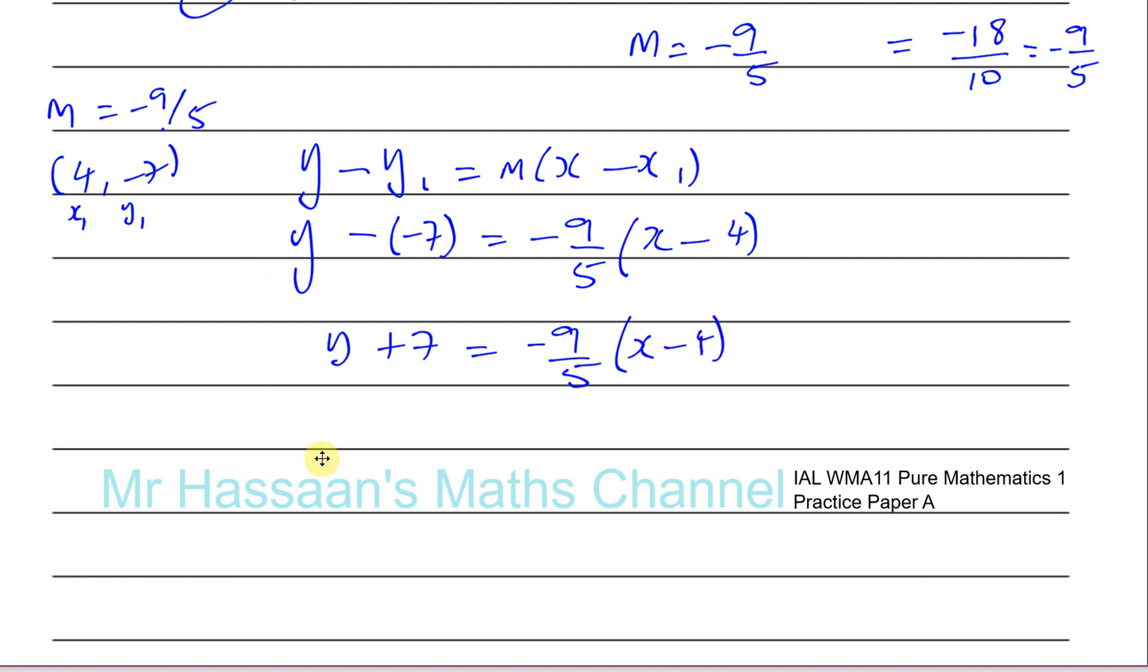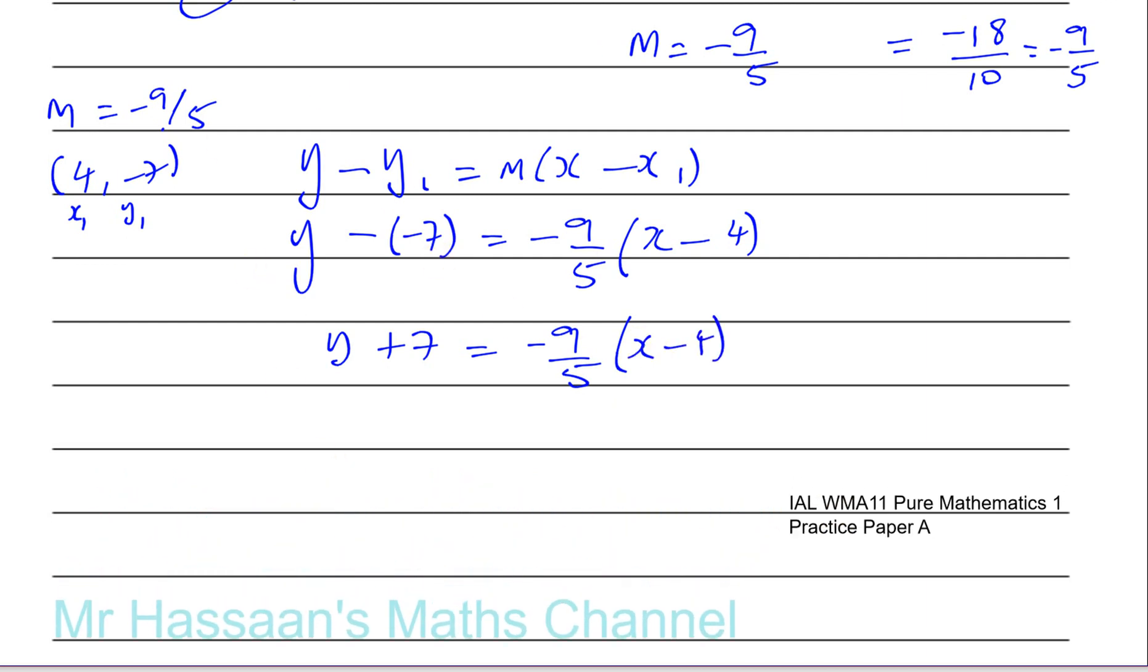I'm going to multiply both sides by 5 to get rid of this fraction. So I have 5Y + 35, and multiply the whole of this side by -9: -9X + 36.